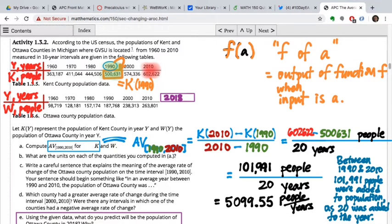People divided by years. This is why you write units next to quantities. I can't divide two measured quantities without dividing their units. People on top, years on the bottom gives people per year. Per always means dividing. So 5099.55 people per year. What is that telling me about Kent County? It's an increase of 5099.55 people per year. That is the average rate at which the population is increasing over these 20 years. We don't know if it was increasing steadily at this rate every year.